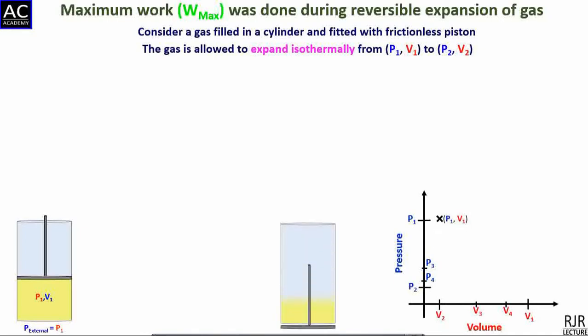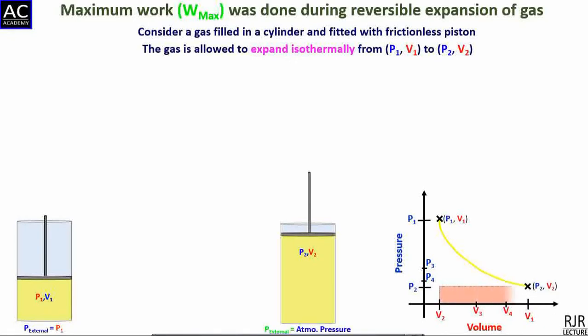The work done in the irreversible process is given by the area under the curve, denoted by W_irrev.